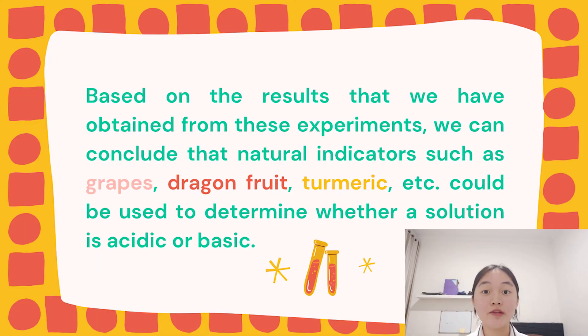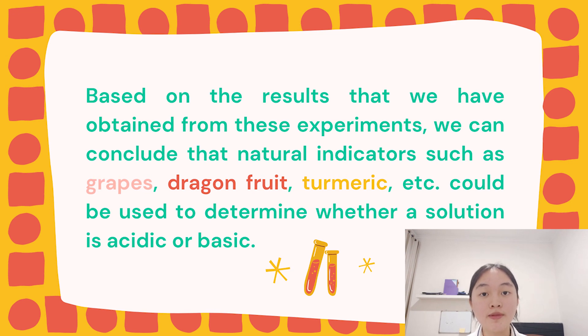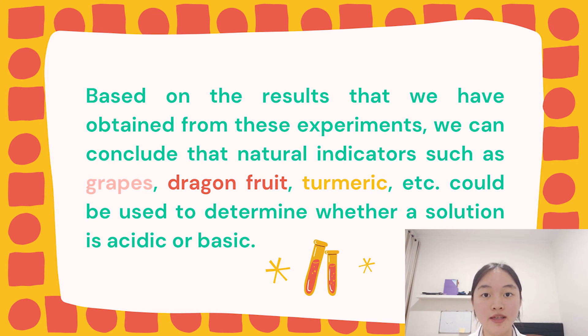Based on the results that we've obtained from this experiment, we can conclude that natural indicators such as grapes, turmeric, dragon fruit, and many more could be used to determine whether a solution is acidic or basic.